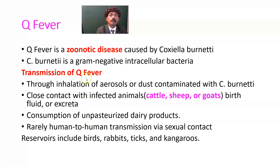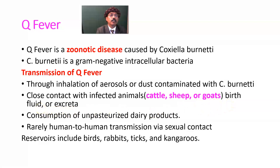Transmission of Q-fever occurs through inhalation of aerosols or dust contaminated with Coxiella burnetii, or close contact with infected animals like cattle, sheep, goat, and pig, and their birth fluids. Birth fluid means the amniotic fluid, the placenta, umbilical cord related fluid, and excreta. A person who has contact with an infected animal, the animal's birth fluid, or excreta may get a Q-fever infection.